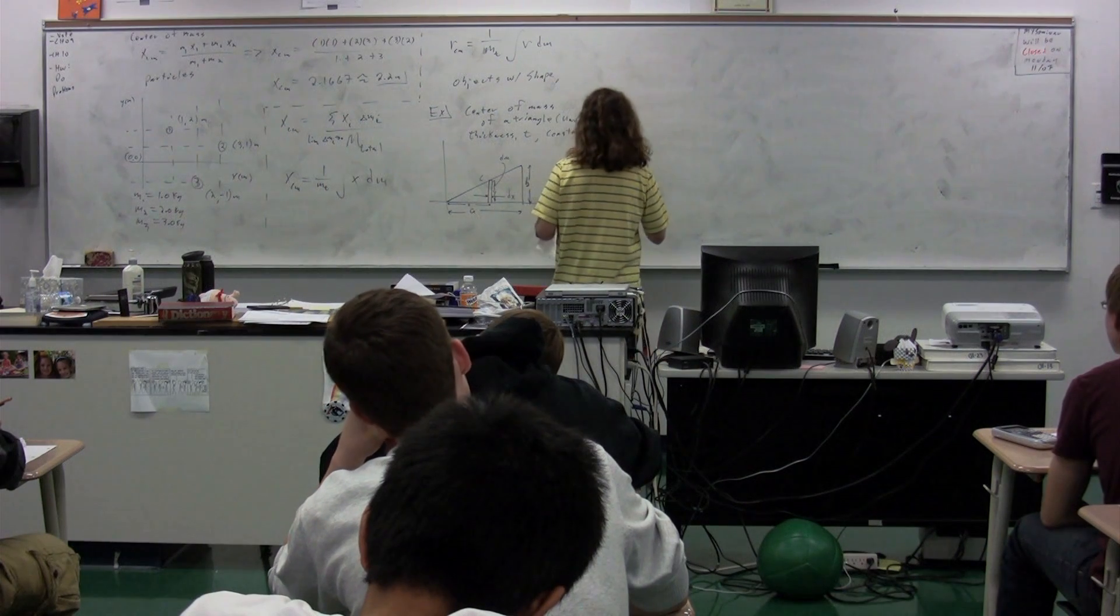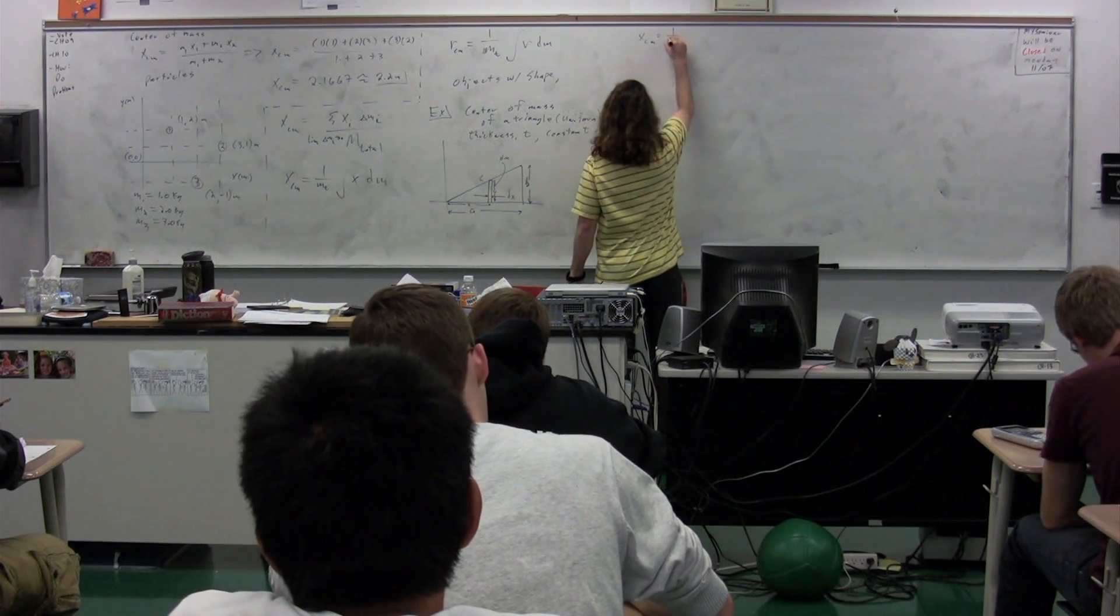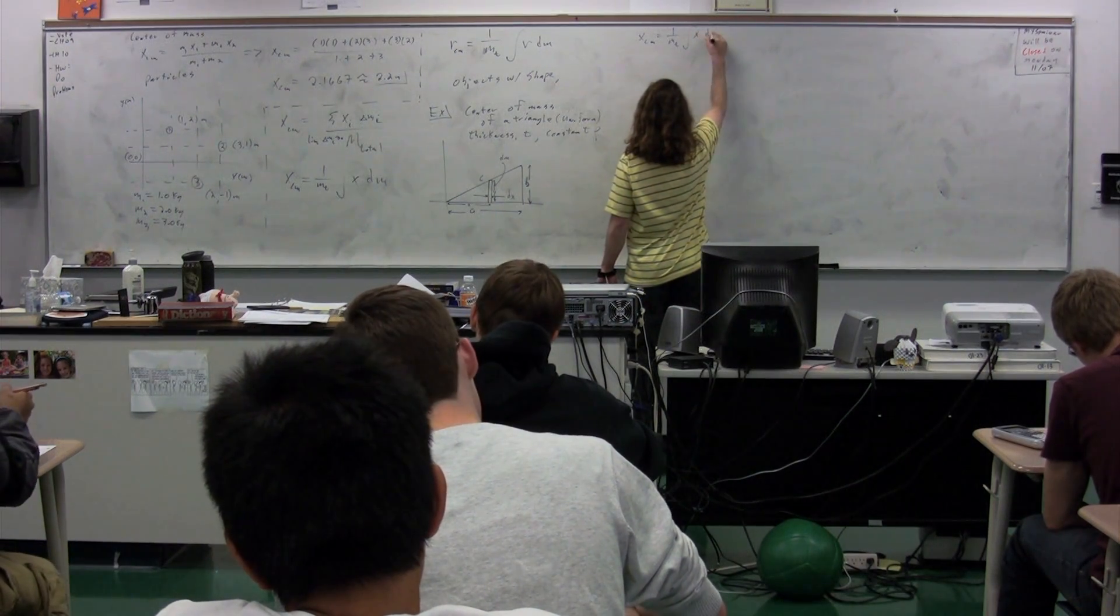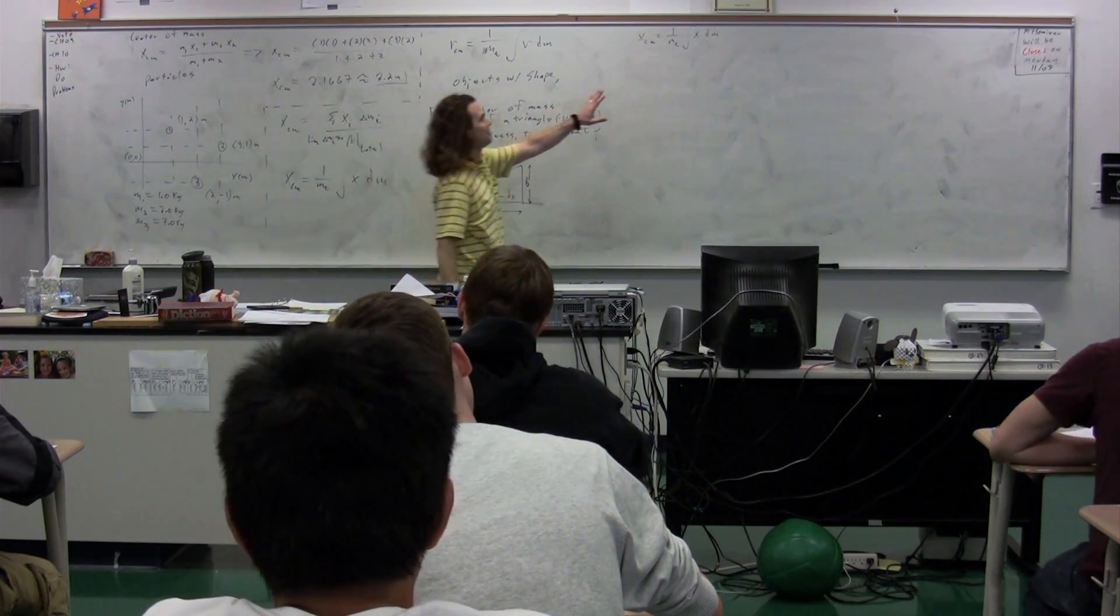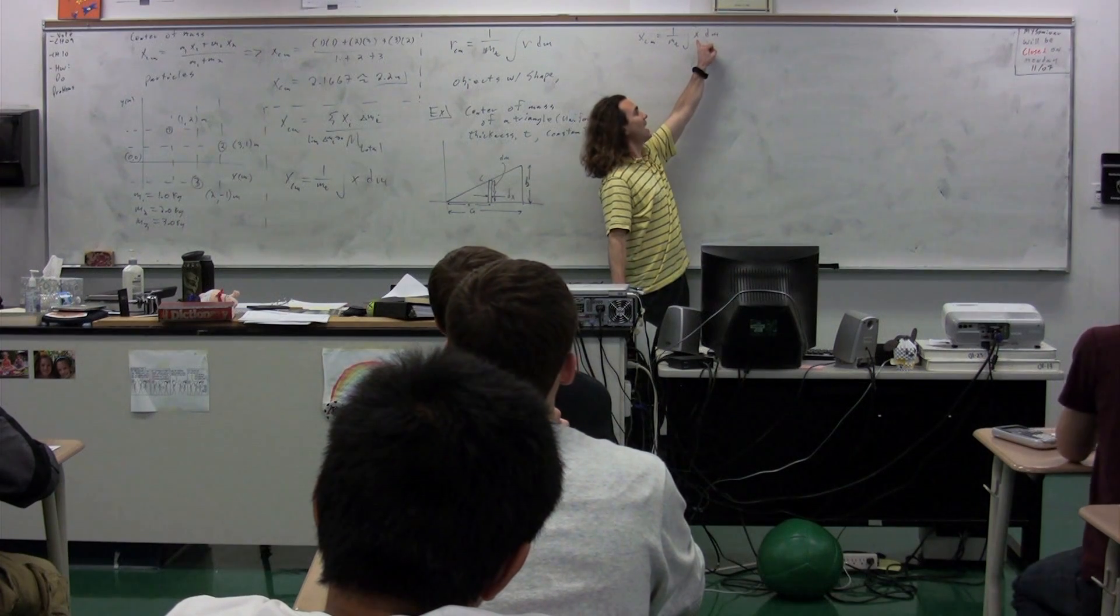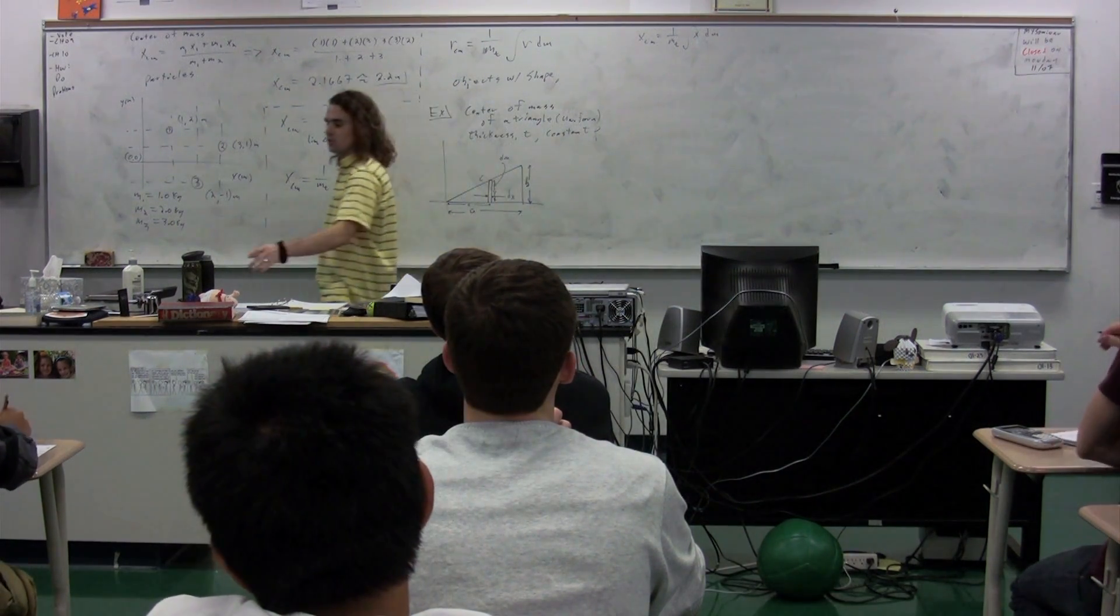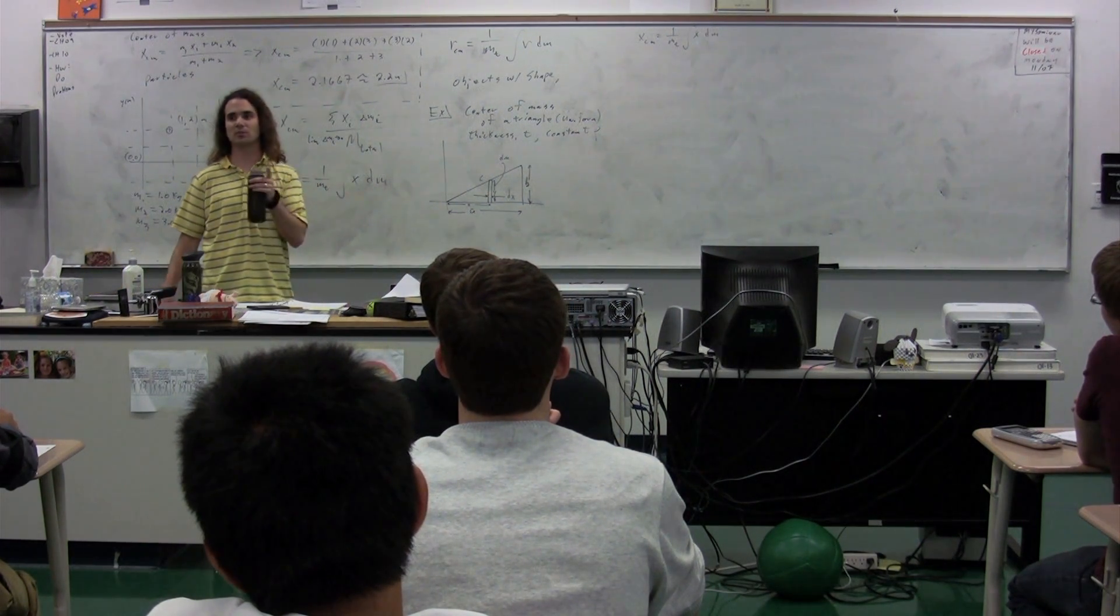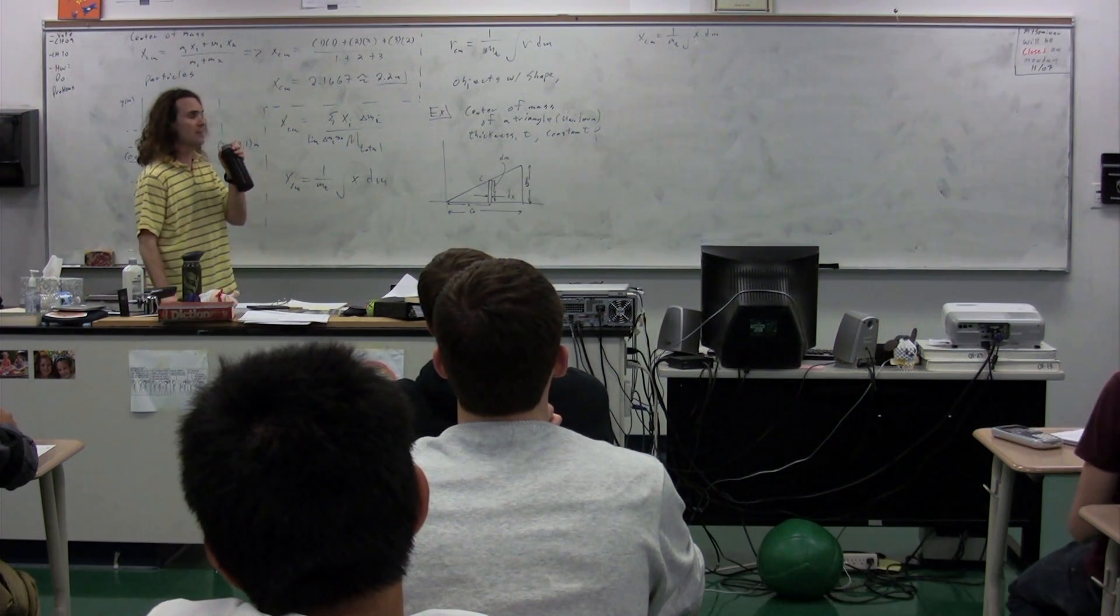So we are going to figure out the x center of mass. That's going to be equal to one over the total mass times the integral of x with respect to mass. Now, you'll notice we have an issue here. We're taking the integral of x, which is a position with respect to mass. And that generally is the issue whenever you're trying to do one of these integrals. You have to figure out how to get x in terms of mass or dm in terms of x.